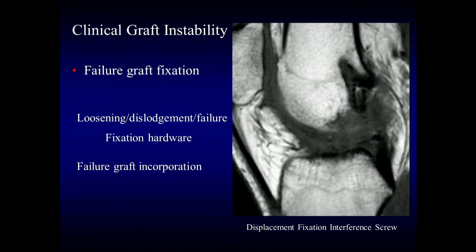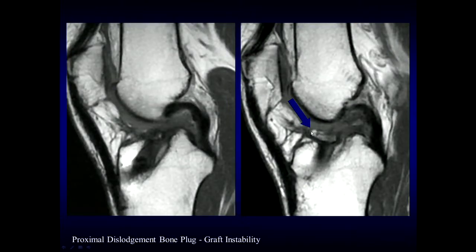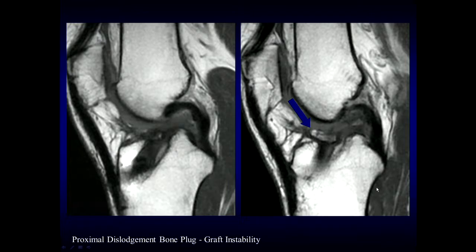Another cause of clinical graft instability is failure of graft fixation. On MR imaging we may see loosening, dislodgement, or failure of graft fixation hardware — as in this patient who had dislodgement and distal migration of an interference screw related to ACL reconstruction. We may also see failure of graft incorporation, such as failure of bone plug incorporation in a prior bone patellar tendon bone ACL reconstruction. Here a case shows a bone plug that has migrated proximally, situated at the joint line rather than fixed within the tibial tunnel, presenting with graft instability.